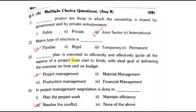Next was October 2022. Under that we had first MCQs. Dash projects are those in which the ownership is shared by the government and private entrepreneurs — the answer is joint sector. Matrix type of structure is flexible. A project management plan is executed to efficiently and effectively guide all aspects of a project from start to finish, with the ideal goal of delivering the outcome on time and on budget. In project management, negotiation is done to resolve the conflict. These are the first four MCQs; there are another six more.